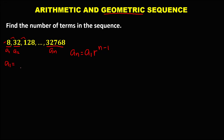So we have a sub 1, the first term, which is positive 8. The last term a sub n is 32,768. To find the common ratio, we use a sub 2 over a sub 1. So that's 32 over 8, which simplifies to positive 4. Therefore, the common ratio is positive 4.